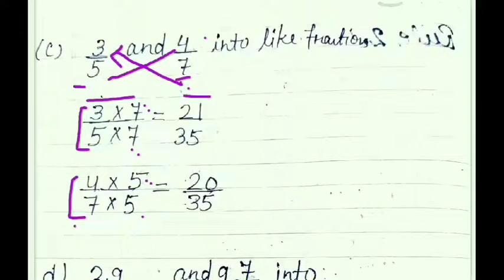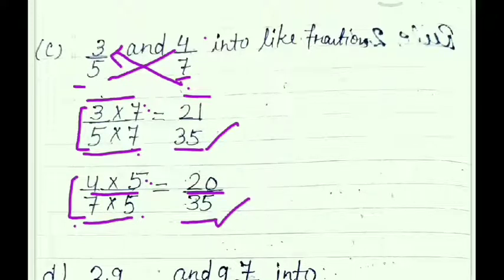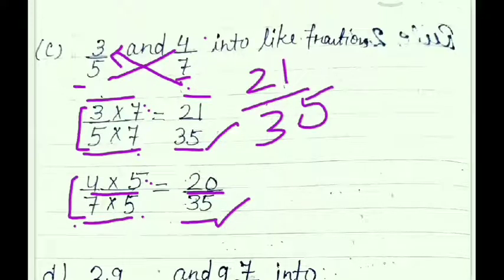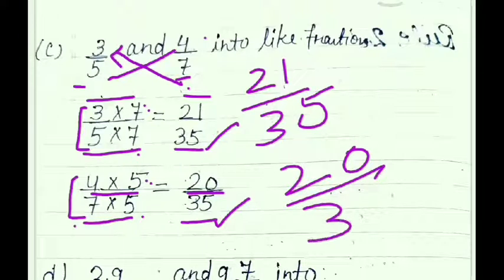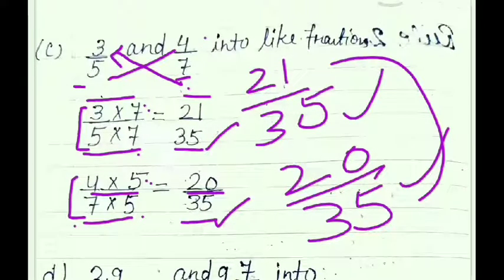After multiplying: 3 × 7 = 21 and 5 × 7 = 35, so first fraction becomes 21 upon 35. And 4 × 5 = 20 and 7 × 5 = 35, so second fraction becomes 20 upon 35. Both denominators are 35. Like fractions are those having the same denominator, so 21 upon 35 and 20 upon 35 are like fractions.